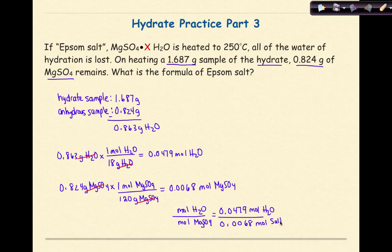Just write salt here. And when we do that, we find that this number works out to be 7. When we rewrite this formula right here for the hydrate, it is MgSO4·7H2O. And that is how we represent Epsom salt.